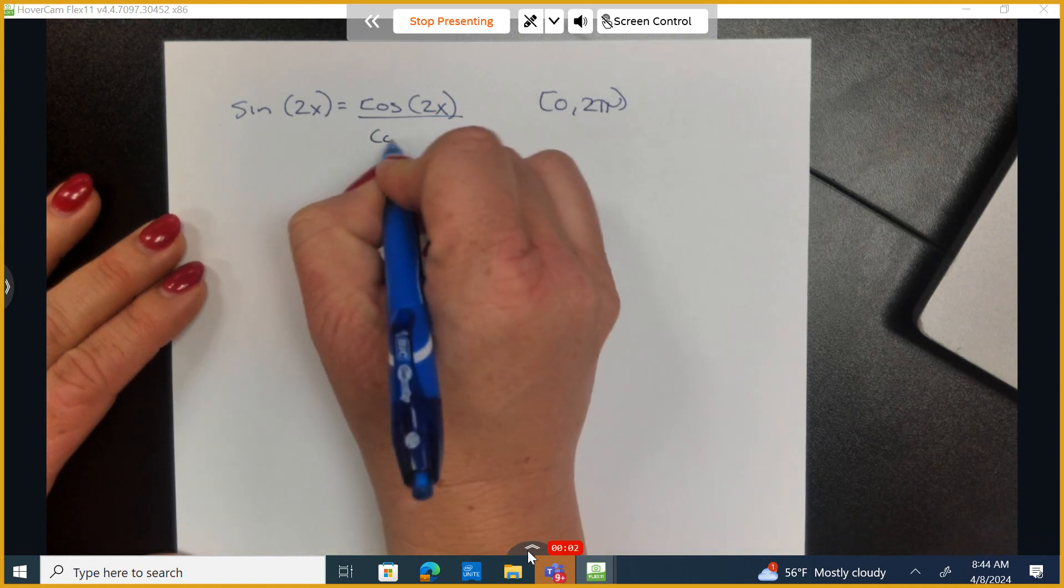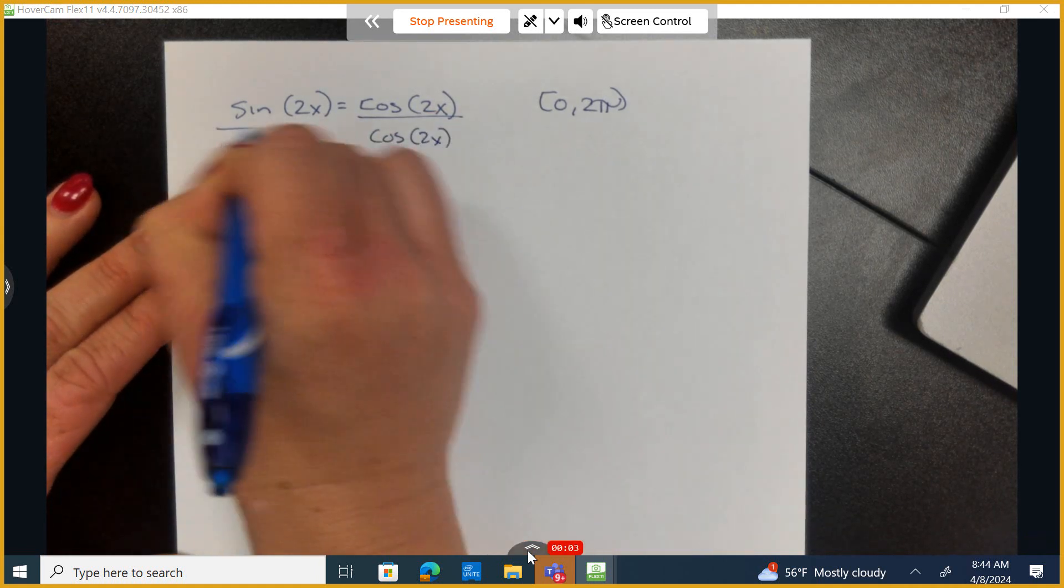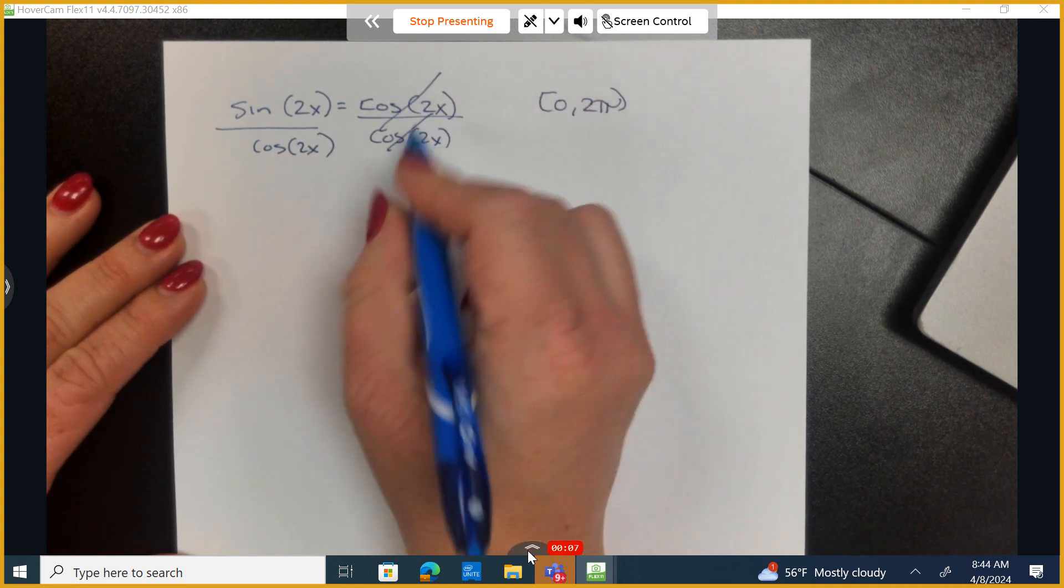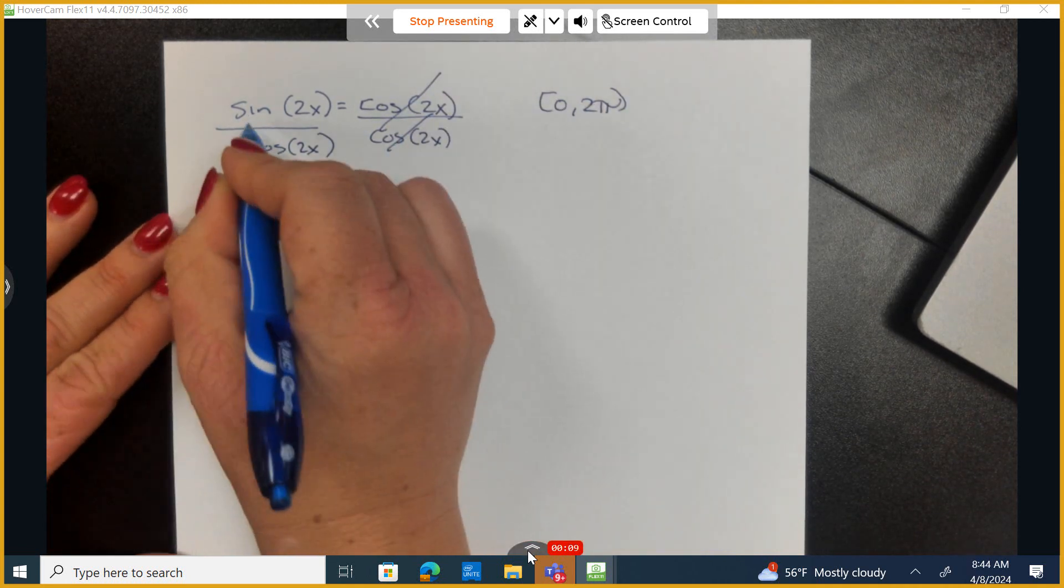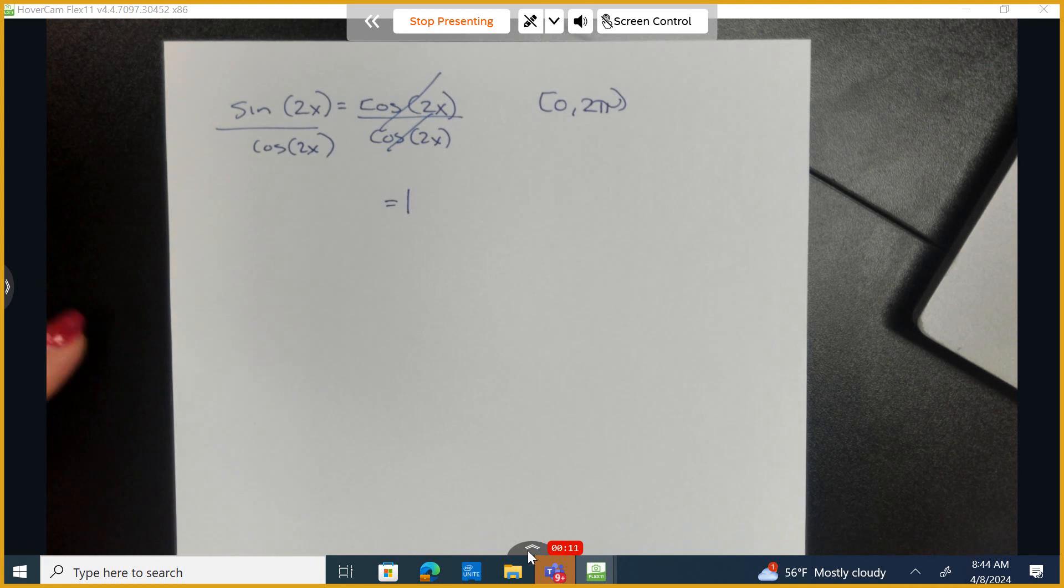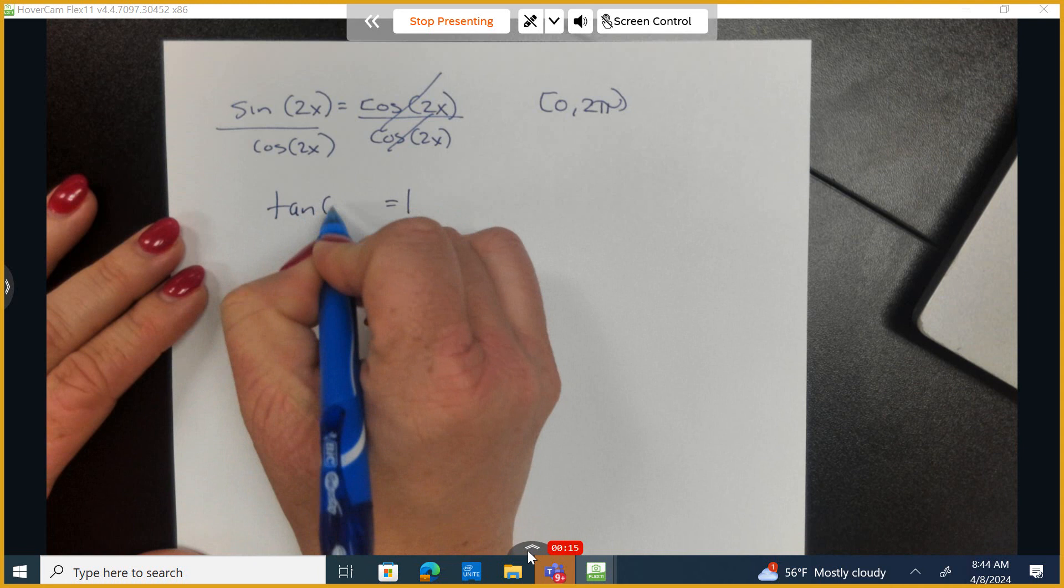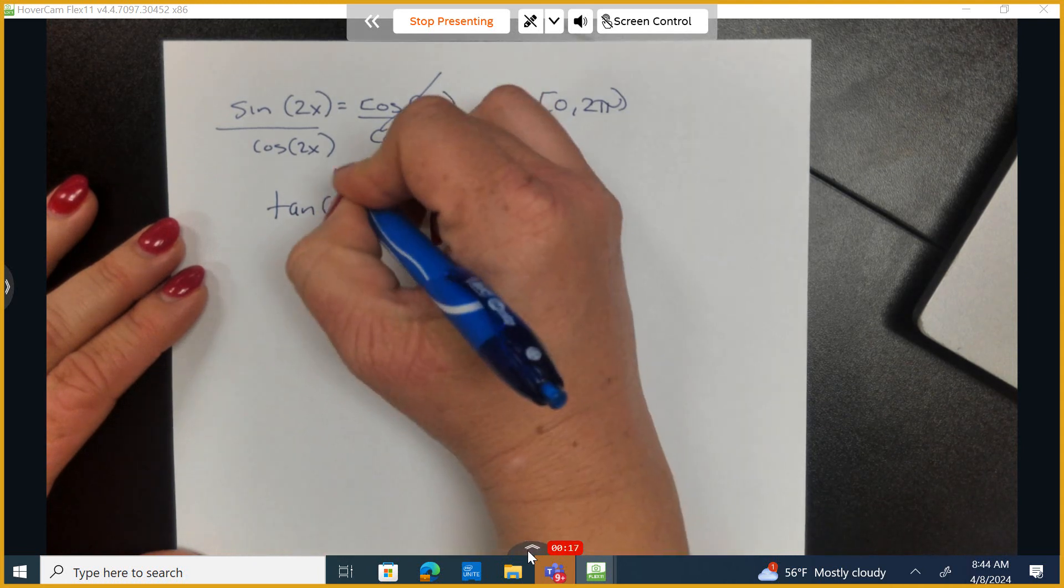Right now, divide by the cosine of 2x. Cosine divided by cosine is 1, and what is this equal? What is the sine of 2x divided by the cosine of 2x? Tangent of 2x. Draw a little arrow here.